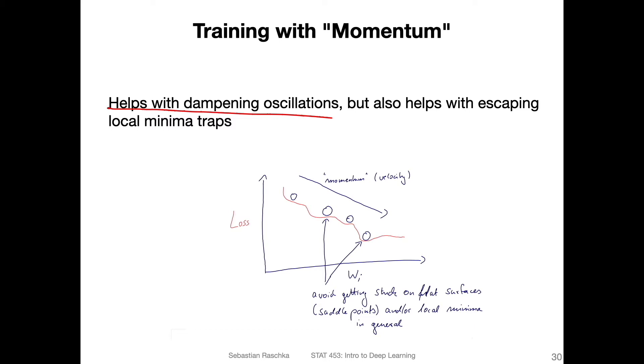Imagine if you do the updates, they are maybe noisy, but at some point you land on a flat surface, then the gradient will be zero, right? And how do you get out of this flat surface? The velocity term, the additional velocity term, can actually help pushing you out of this flat surface.